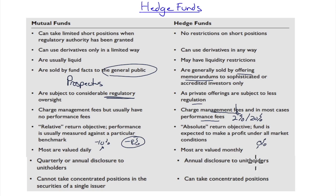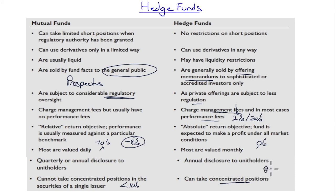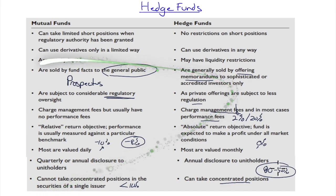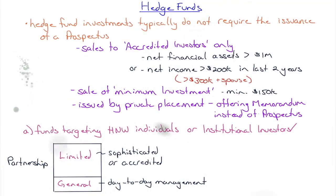Most hedge funds are valued monthly versus mutual funds which are valued daily. Hedge funds have annual disclosure to unit holders versus quarterly or annual for mutual funds. A hedge fund can take very concentrated positions — mutual funds are limited to typically less than 10% in any one issuer and less than 20% in any one industry. A hedge fund can put up to 80–90% of its assets in one particular security or bet.